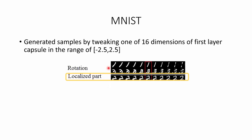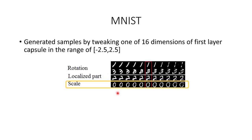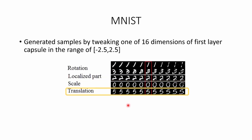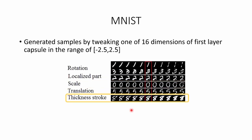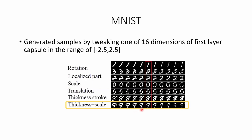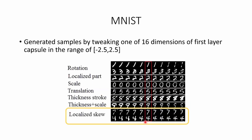By tweaking different dimensions, we can generate samples with different properties. Changing one dimension changes the rotation in the generated samples. For another dimension, we see localized parts; another encodes scale; another encodes translation; another encodes thickness of a stroke; another encodes thickness plus scale. Finally, localized skew clearly changes when we tweak one of the dimensions.